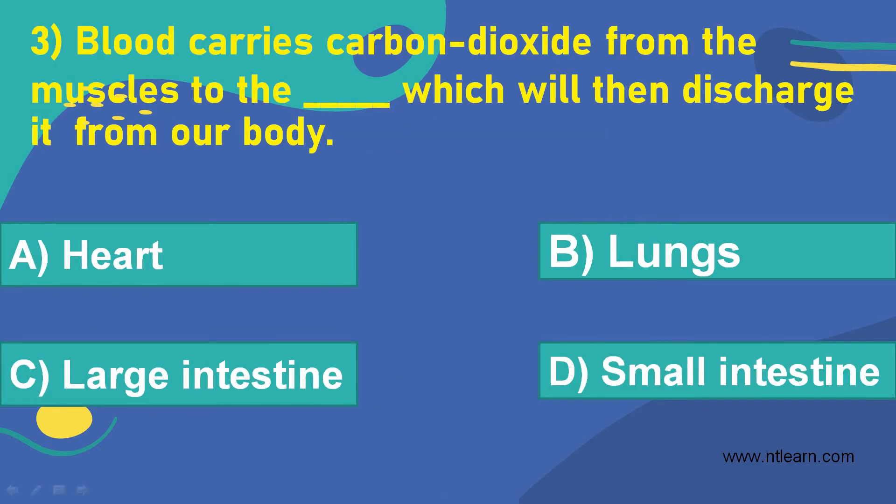Blood carries carbon dioxide from the muscles to the blank, which will then discharge it from our body. Option A: heart. Option B: lungs. Option C: large intestine. Option D: small intestine.